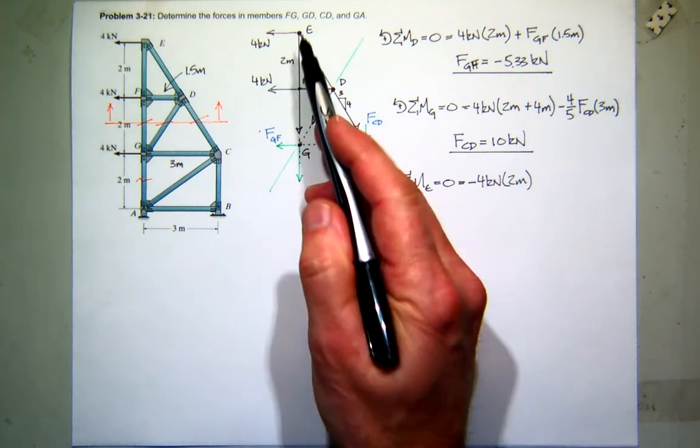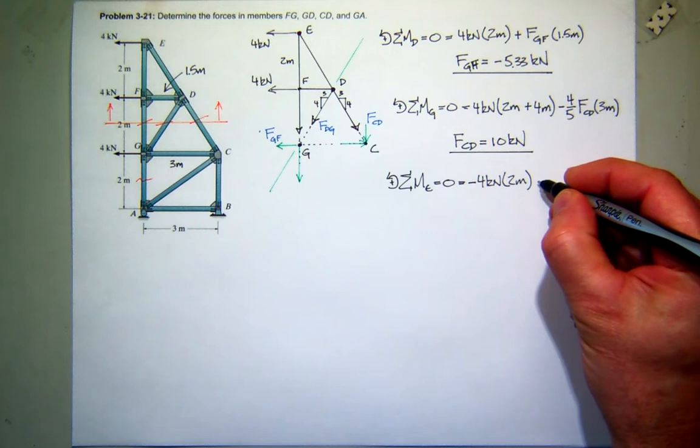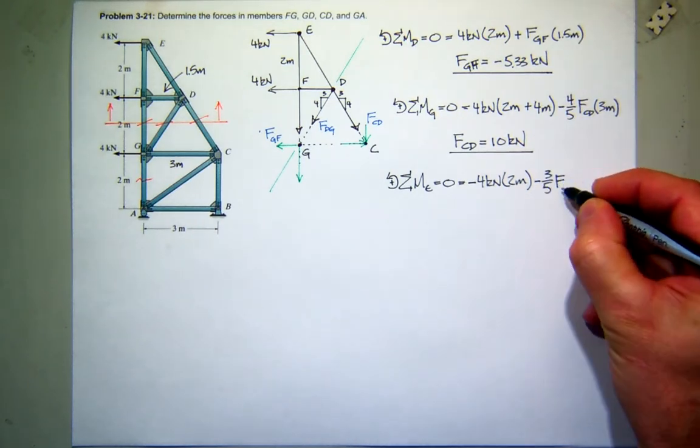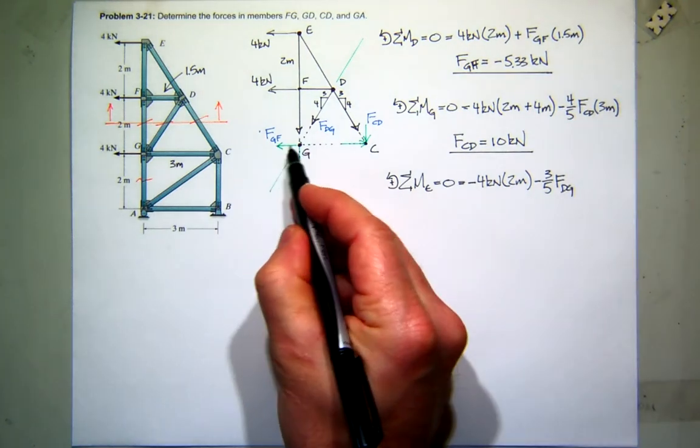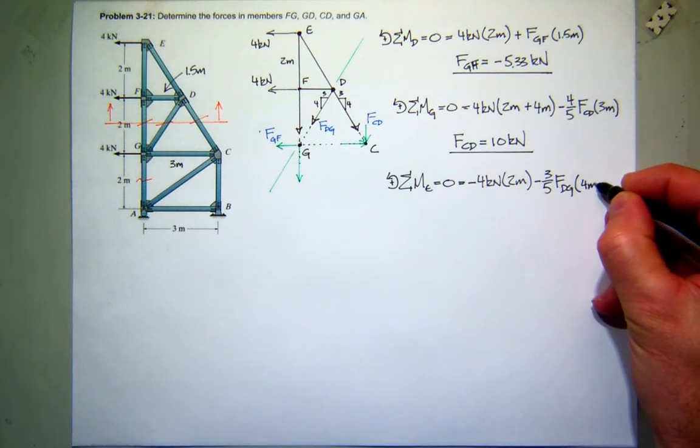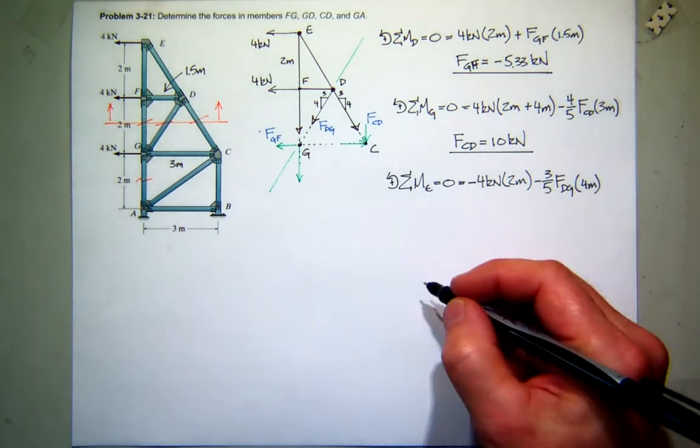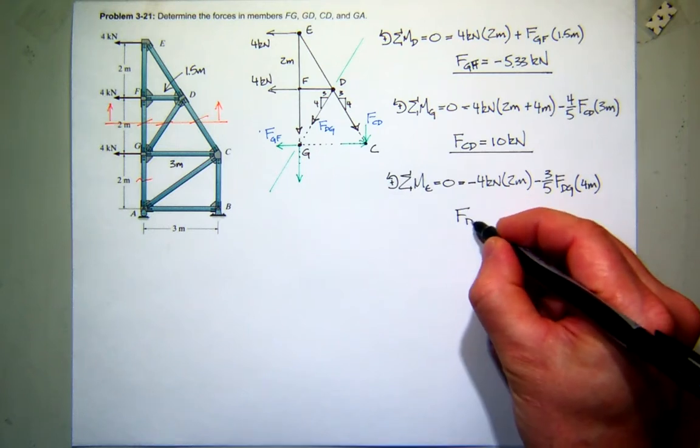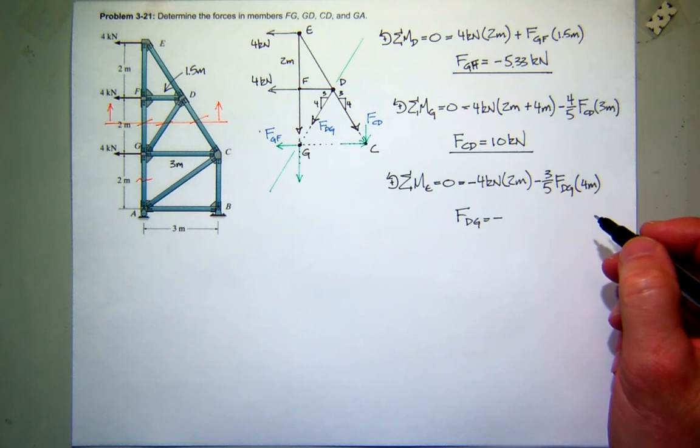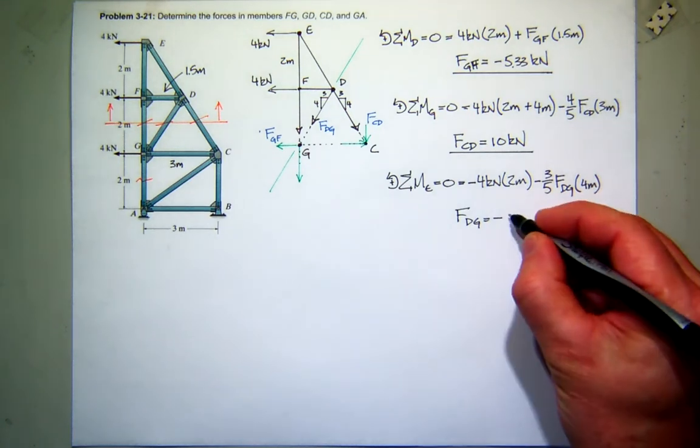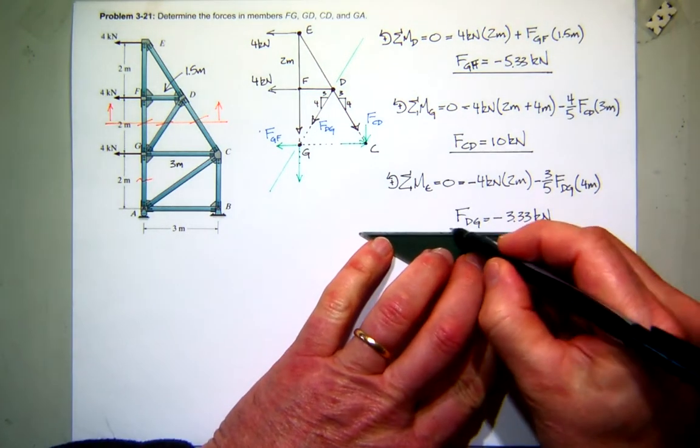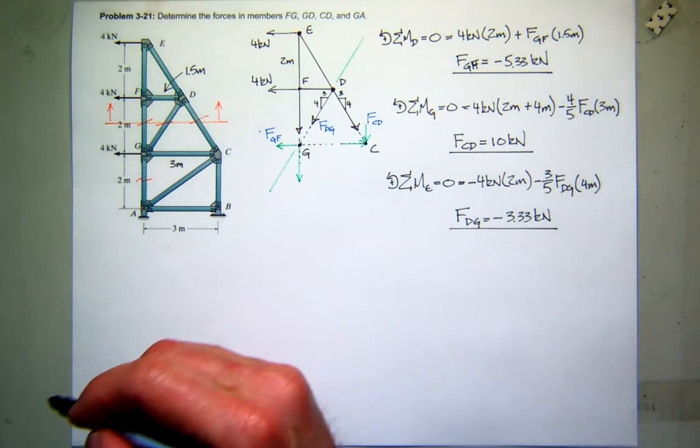Now this creates what kind of moment about E, positive or negative? Negative. So I have 3/5 of the force DG, that's this component right here, times that distance which is 4. So it looks like the force in DG is going to be negative and equal to 3.33, I think. You guys get 3.33?